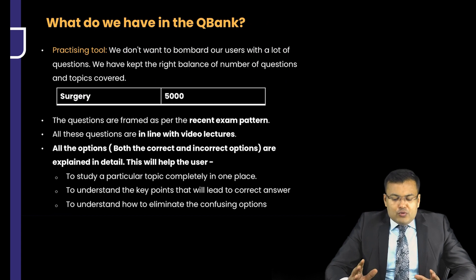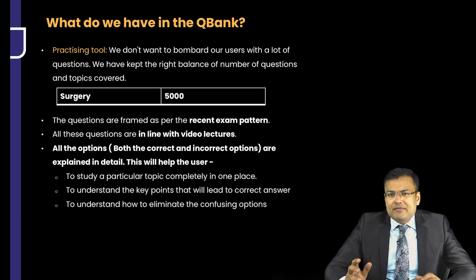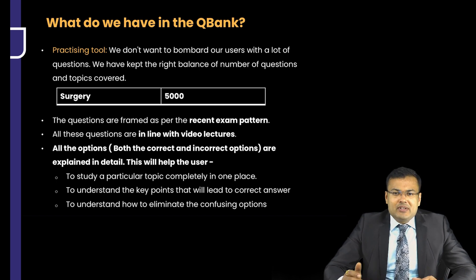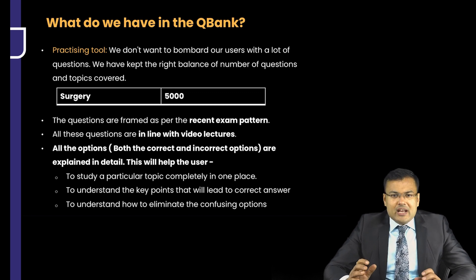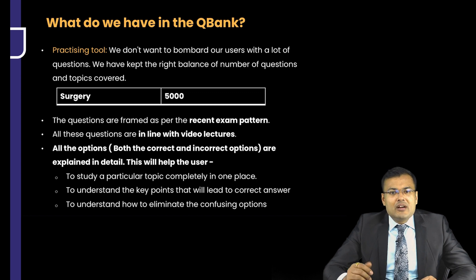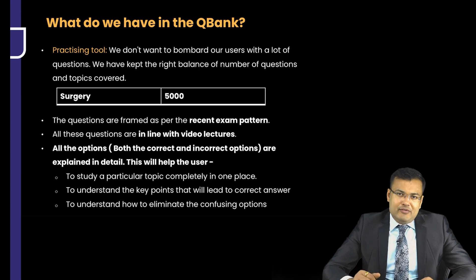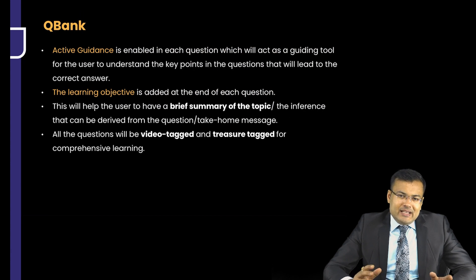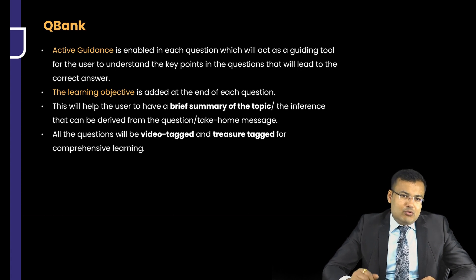In the QBank, we don't want to bombard users with lots of questions, so we've kept the right balance of number of questions and topics covered. There are 5000 questions in surgery. The questions are framed as per the recent exam pattern and are in line with the video lectures. All options — whether correct or incorrect — are explained in detail. This will help the user study a particular topic completely in one place, understand the key points leading to the correct answer, and understand how to eliminate confusing options. Active guidance is enabled in each question, acting as a guiding tool to understand the key points that lead to the correct answer.